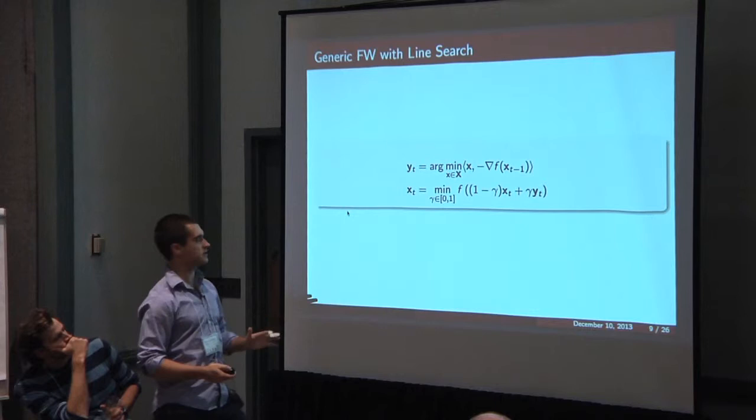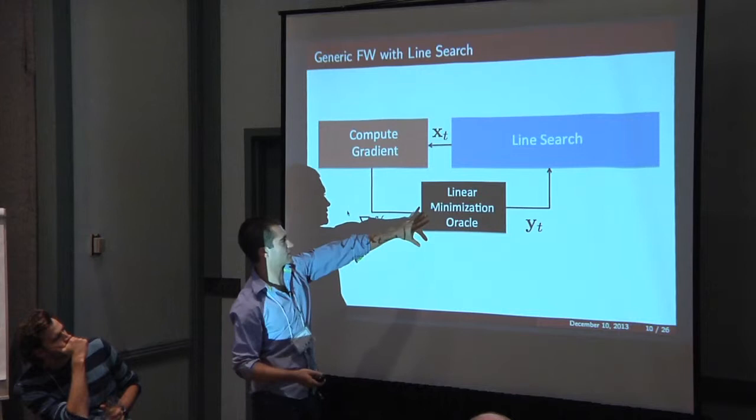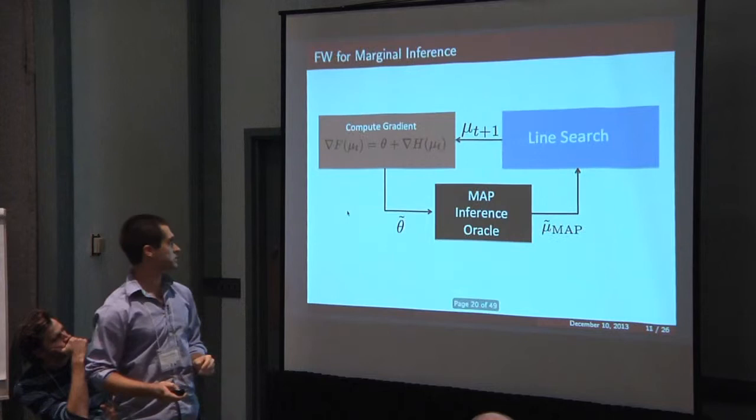Frank-Wolf is pretty straightforward for this. This is just the generic pseudocode for Frank-Wolf with line search, which we've talked about a lot today. A schematic is that you basically have three boxes. One for computing the gradient, one for doing linear minimization, one for line search. I'm just going to talk about line search here.